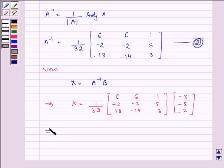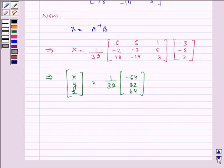On solving it, we have matrix X equals 1 by 32 times minus 64, 32, 64. That gives us the answer as minus 2, 1, and 2, which equals x, y, and z.